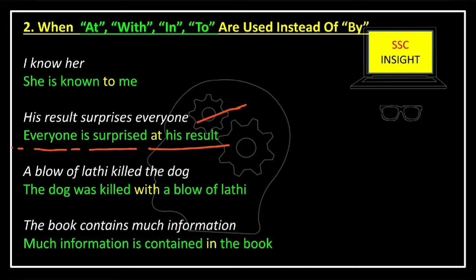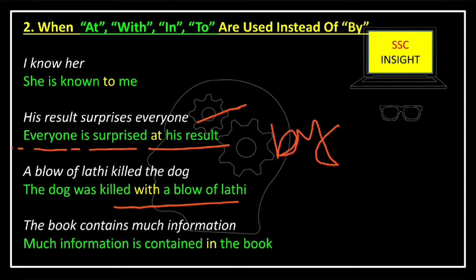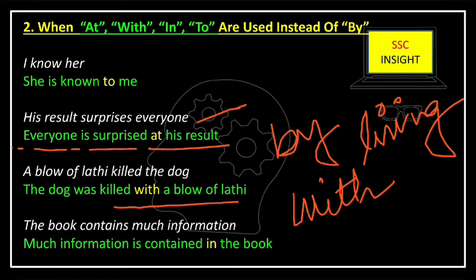The next example: 'His result surprises everyone' — its passive voice will be 'Everyone is surprised at his result.' Verbs like 'surprised' and 'astonished' always go with the preposition 'at.' Next: 'A blow of latte killed the dog' — the passive voice is 'The dog was killed with the blow of latte.' We use 'with' instead of 'by' because 'by' is used for a living doer, while 'with' is used for non-living objects. A blow of latte is non-living, so we use 'with.'